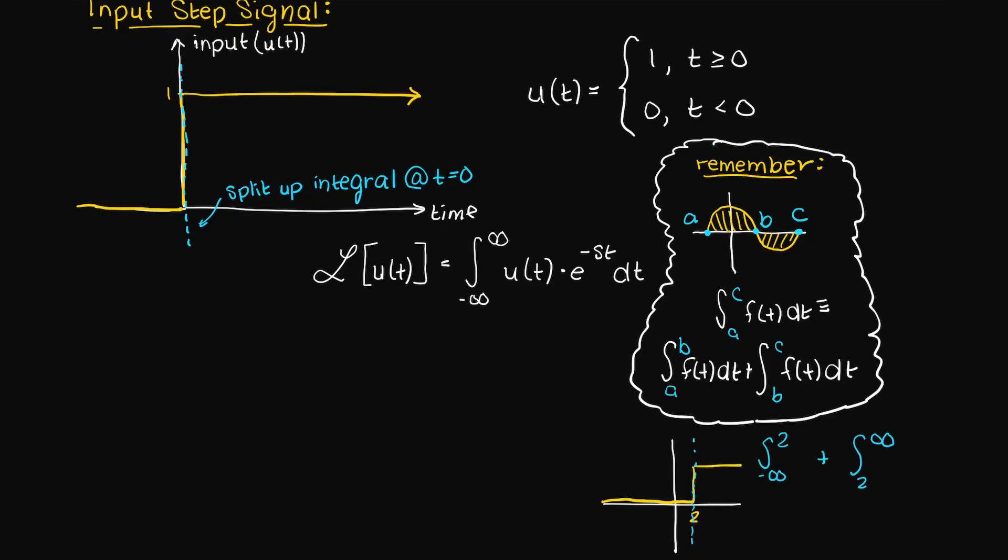However, if your step function looks like the following, then you would have your integral from negative infinity to two and not zero. So, since this is a compound function, it is a function with two or more equations, let's apply the input values, so zero initially and one for times greater than zero.